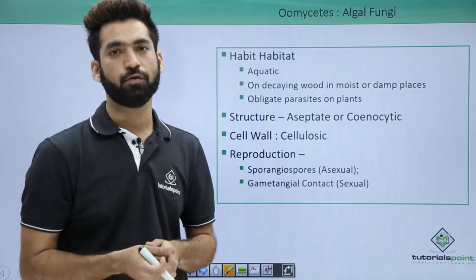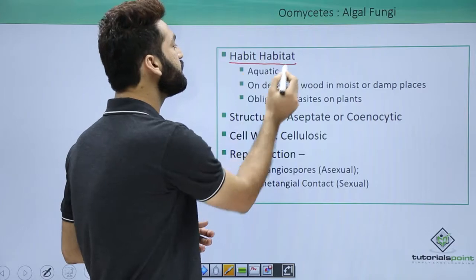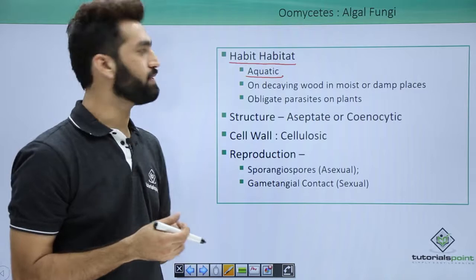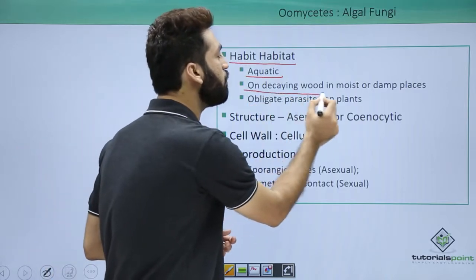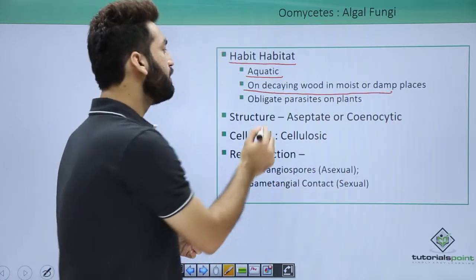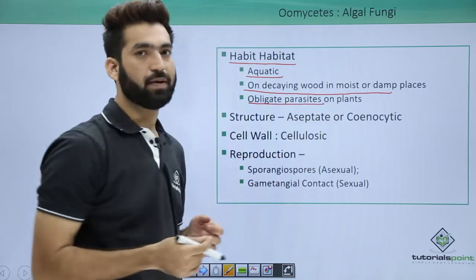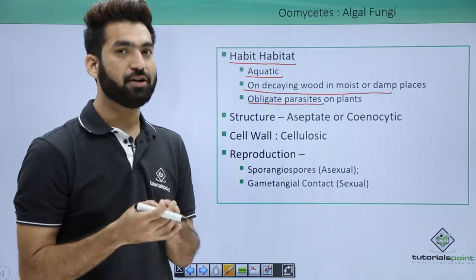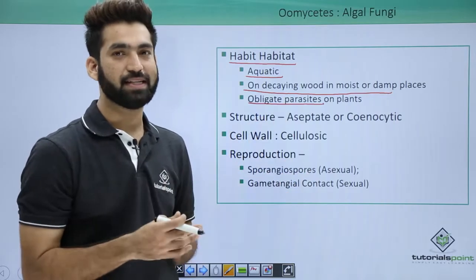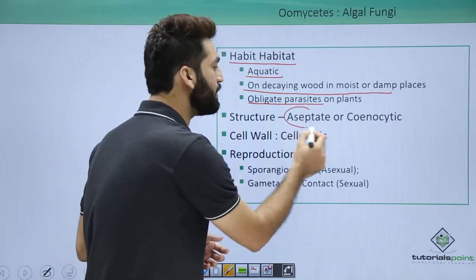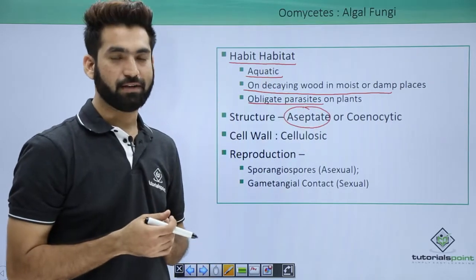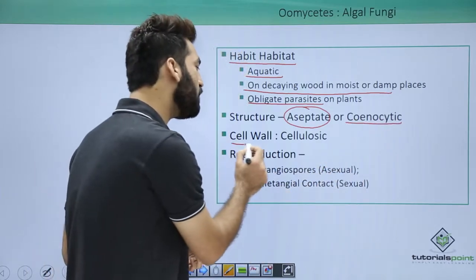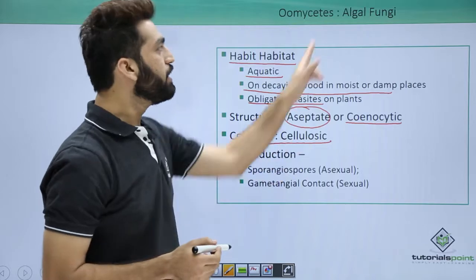Oomycetes have an aquatic habitat — they basically prefer aquatic systems. They also grow on decaying wood or damp areas, and are obligate parasites on plants. When we talk about structure: because they are phycomycetes, oomycetes are aseptate, meaning there are no septa between the hyphae. When there are no septa, they are multinucleated or coenocytic. The cell wall is cellulosic, which is why they are called algal fungi.